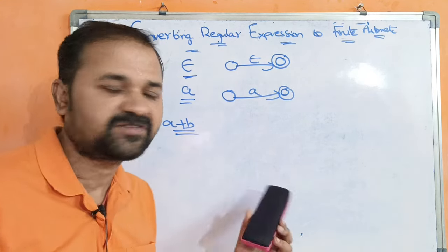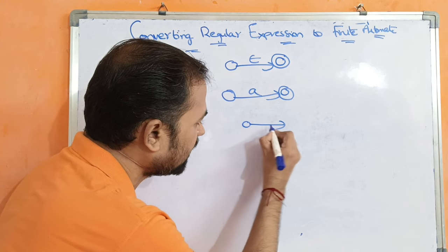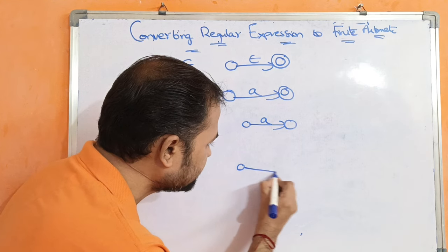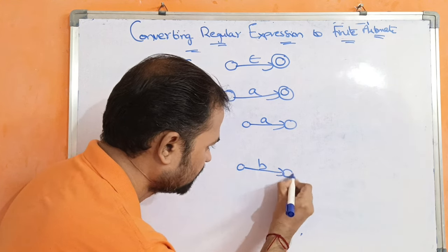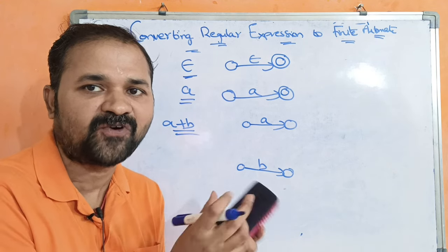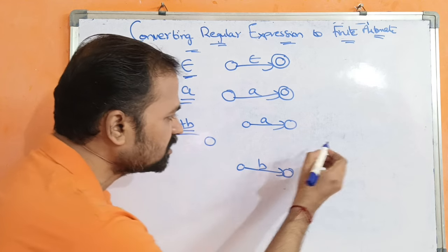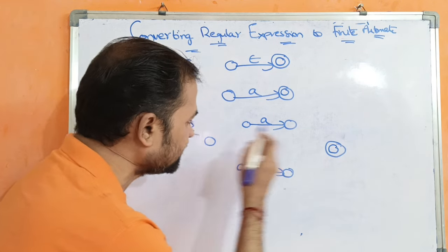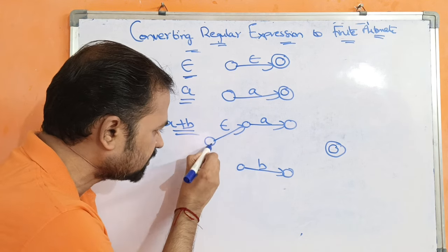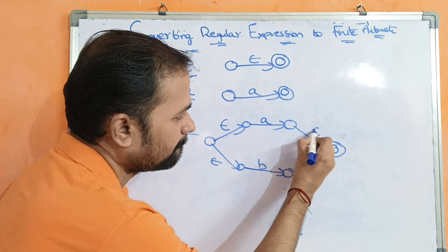For the regular expression a plus b, we require two states for representing a — on applying a, we move from this state to this state. Next, we represent b similarly. Plus stands for union, so we perform the union operation on a and b by creating two additional states, where the last state is the final state. On applying epsilon, we can go from state to state, connecting them with epsilon transitions.